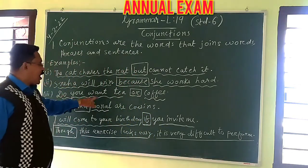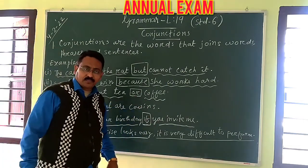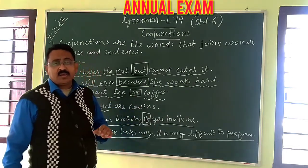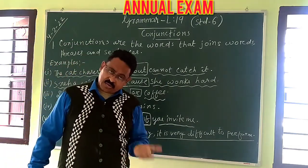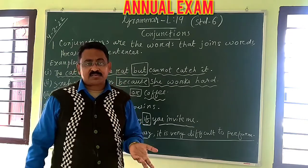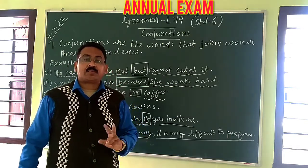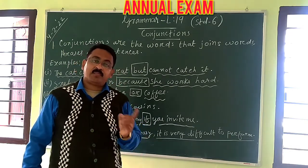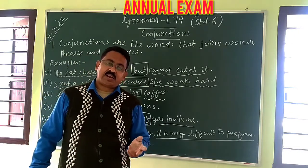Next example with 'or': 'Do you want tea or coffee?' Either tea or coffee. This conjunction 'or' is used when we have to select one from two options.